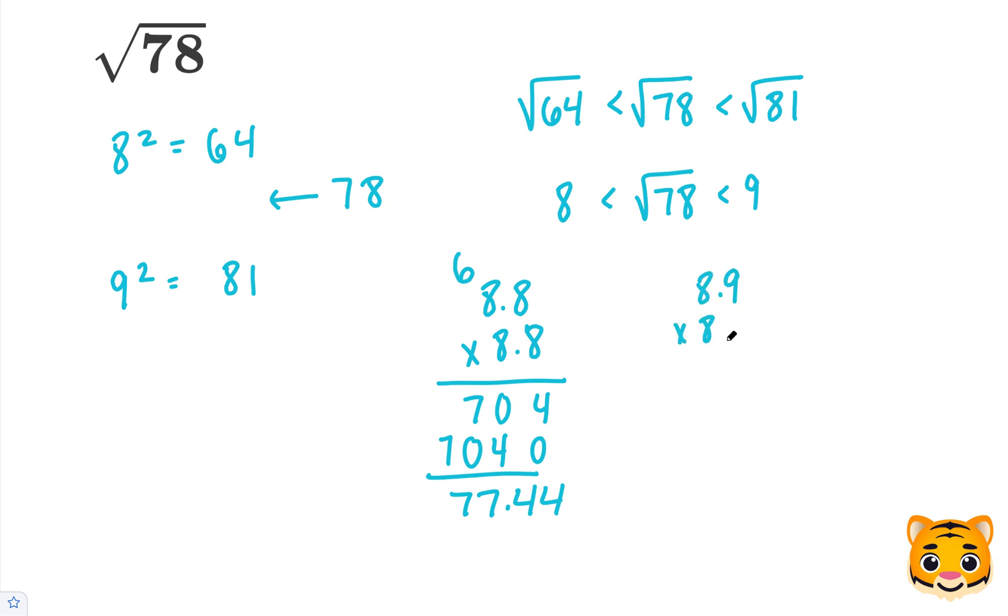We can try 8.9 times 8.9 to see if that is any closer. 9 times 9 is 81, carry the 8. 8 times 9 is 72, plus 8 is 80. Add the 0. 8 times 9 is 72, carry the 7. And then 8 times 8 is 64, plus 7 is 71. When we add these together, we get 79.21.